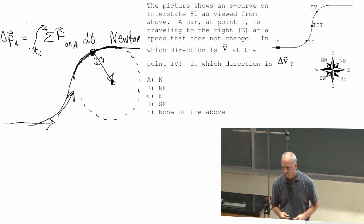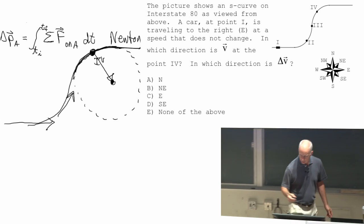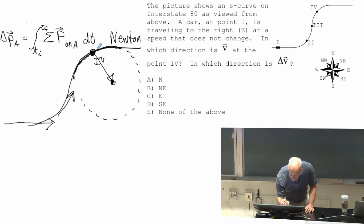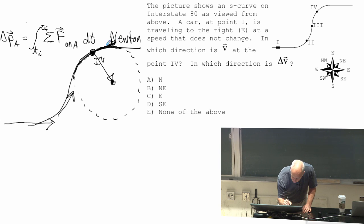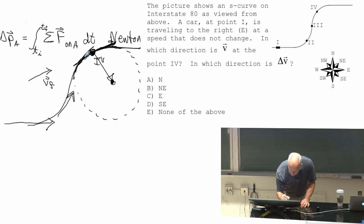Can we use the subtraction method for this one? For point four? Yes, you can. If you take a point just afterwards, you get a vector like that. So v final looks like that. If you take a point just before, you get a vector that looks like that. This one is something like that.